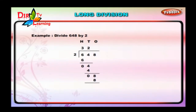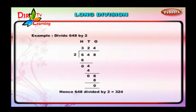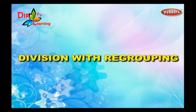Write 4 in the ones place in the quotient. Hence, 648 divided by 2 is equal to 324.